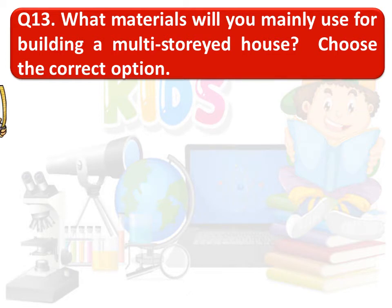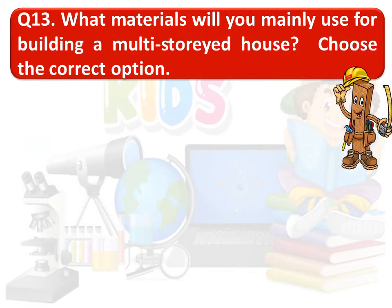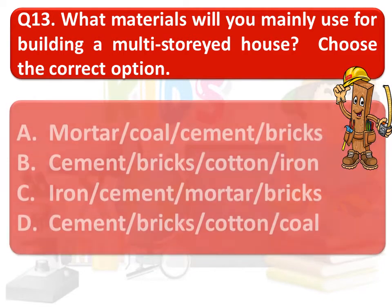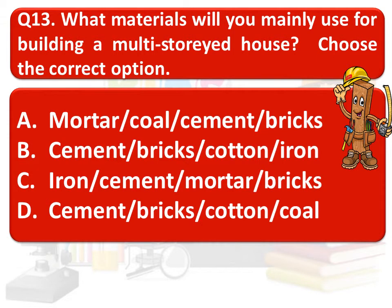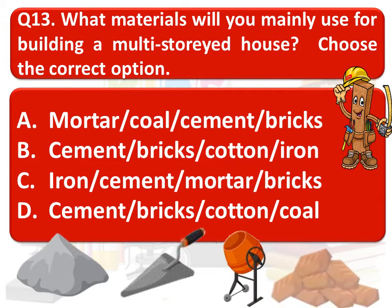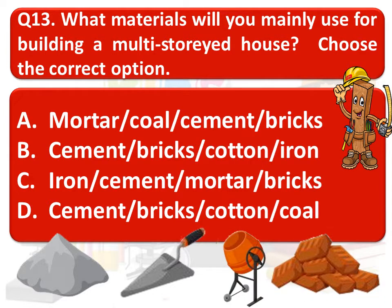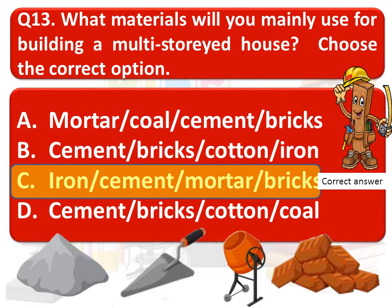What materials will you mainly use for building a multi-storied house? Option A: mortar, coal, cement and bricks. Option B: cement, bricks, cotton, iron. Option C: iron, cement, mortar and bricks. Option D: cement, bricks, cotton or coal. The correct answer is Option C — iron, cement, mortar and bricks.